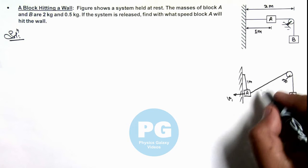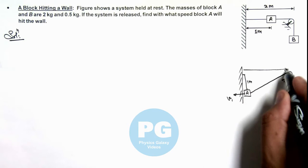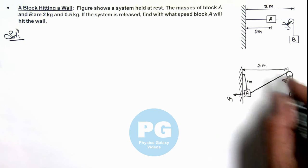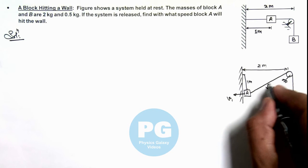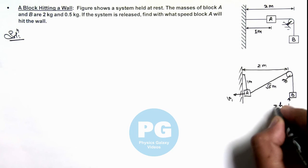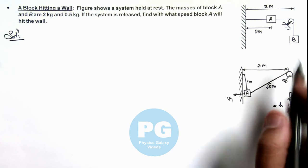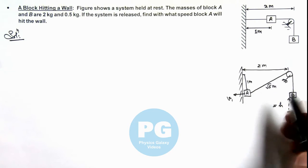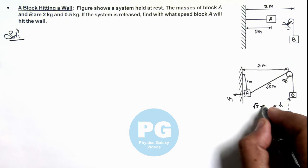In this situation, as this length is 2 meters, this length will be root 5 meters, and you can see block B would be displaced up by a height h which can be written as: earlier this is 1 meter, now this is root 5 meters, this is root 5 minus 1 meter.